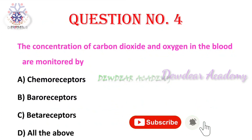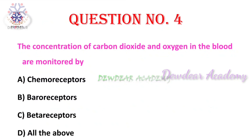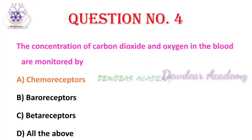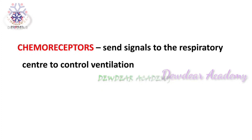Question 4: the concentration of carbon dioxide and oxygen in the blood are monitored by — options: chemoreceptors, baroreceptors, beta receptors, all of the above. The right answer is chemoreceptors. In respiration control, chemoreceptors monitor the partial pressure of oxygen, pH, and partial pressure of carbon dioxide in the blood, and send signals to the respiratory center to control ventilation.